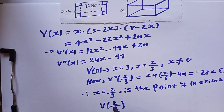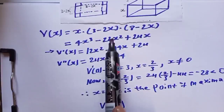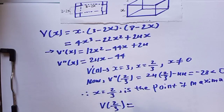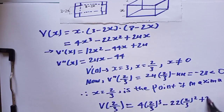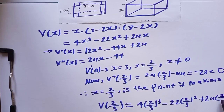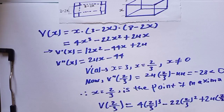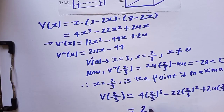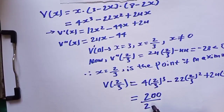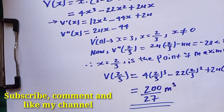Now find the maximum volume by substituting x = 2/3 into the volume equation: 4 times (2/3)³ minus 22 times (2/3)² plus 24 times (2/3). When you substitute 2/3 into that equation, you get 200/27 cubic meters. This is the maximum volume.